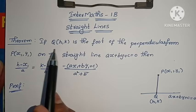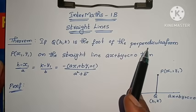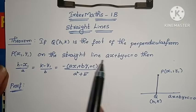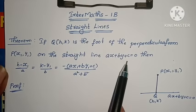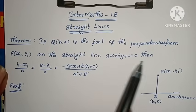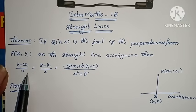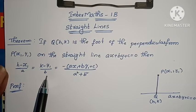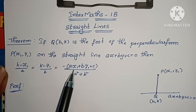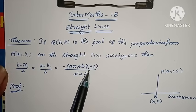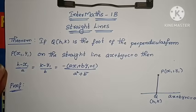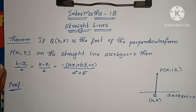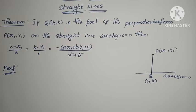First theorem: If Q(h,k) is the foot of the perpendicular from P(x₁,y₁) on the straight line ax plus by plus c equals to 0, then (h minus x₁) by a equals to (k minus y₁) by b equals to minus of (ax₁ plus by₁ plus c) by (a squared plus b squared). This is the foot of the perpendicular theorem, and now we will see its proof.